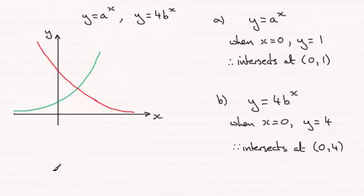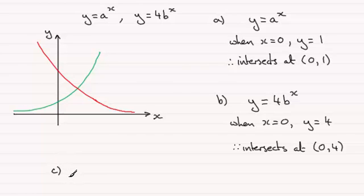Hi. Now for this last part we're being asked to state a possible value for A and a possible value for B in these two equations.